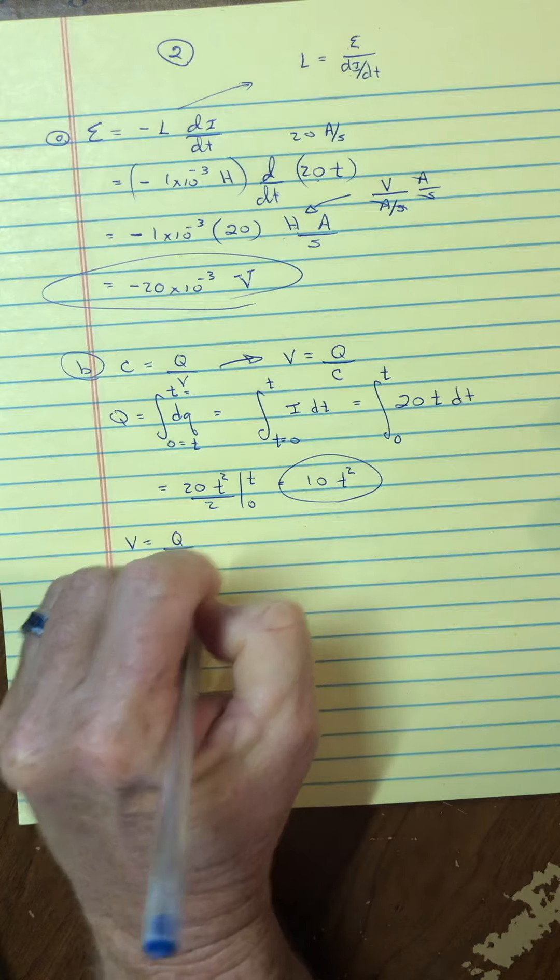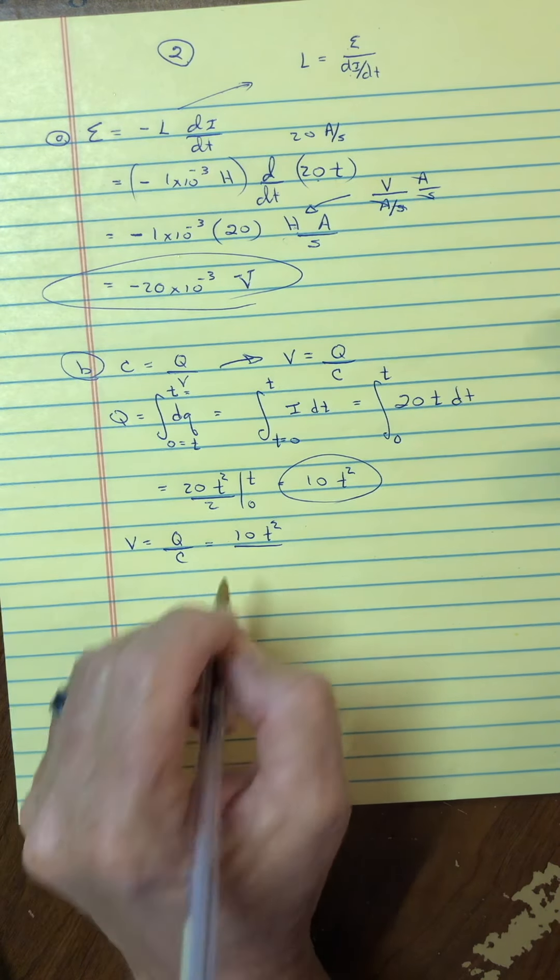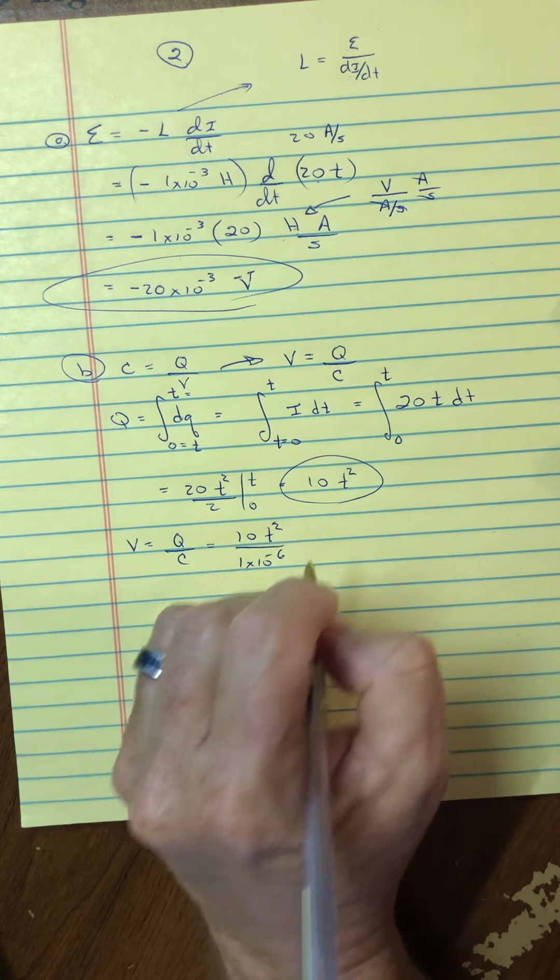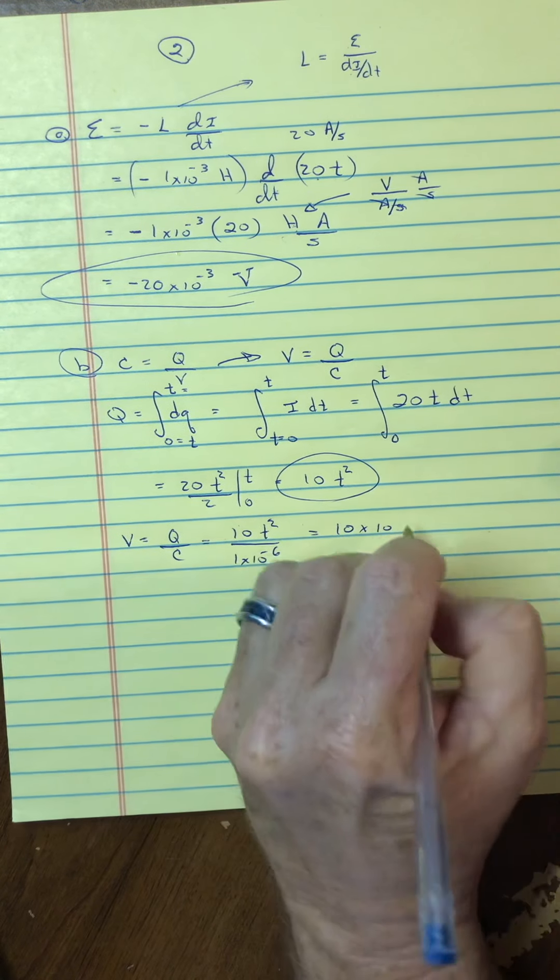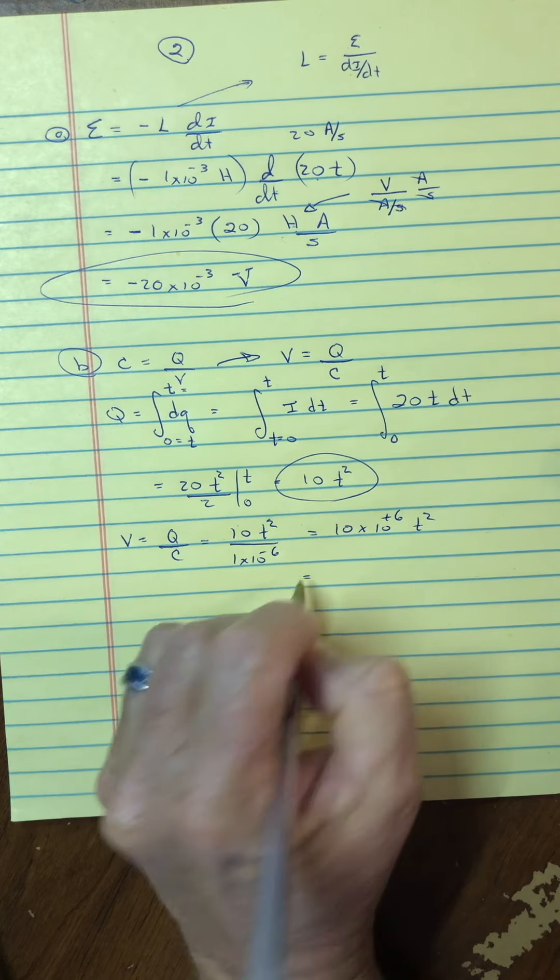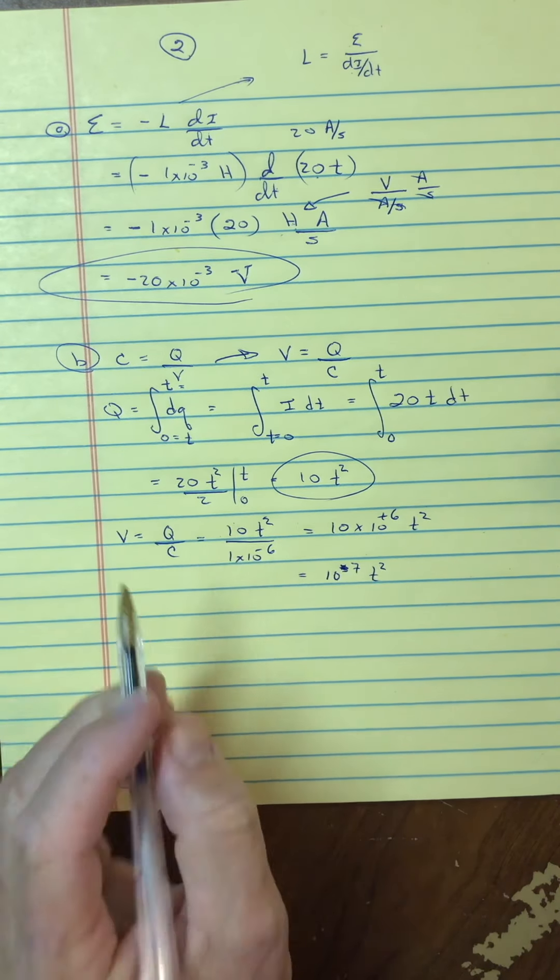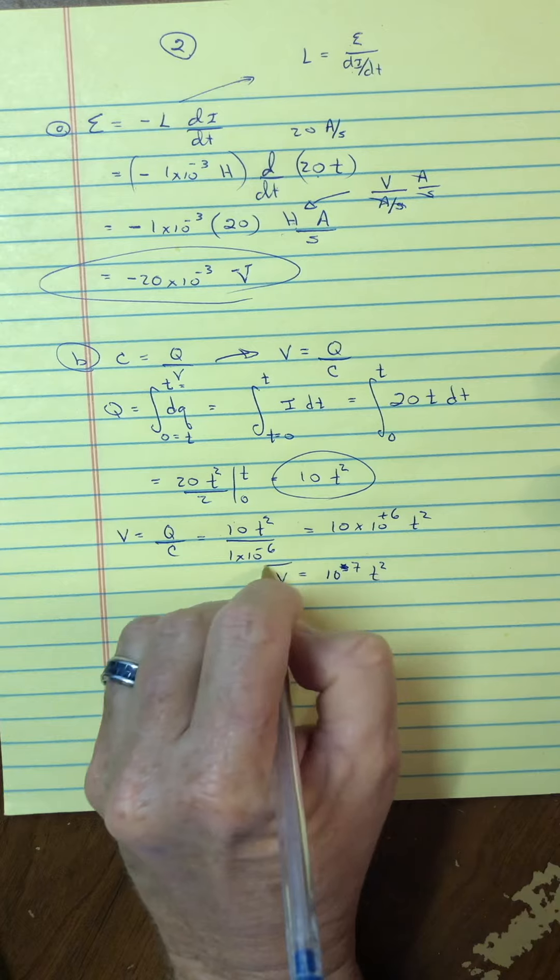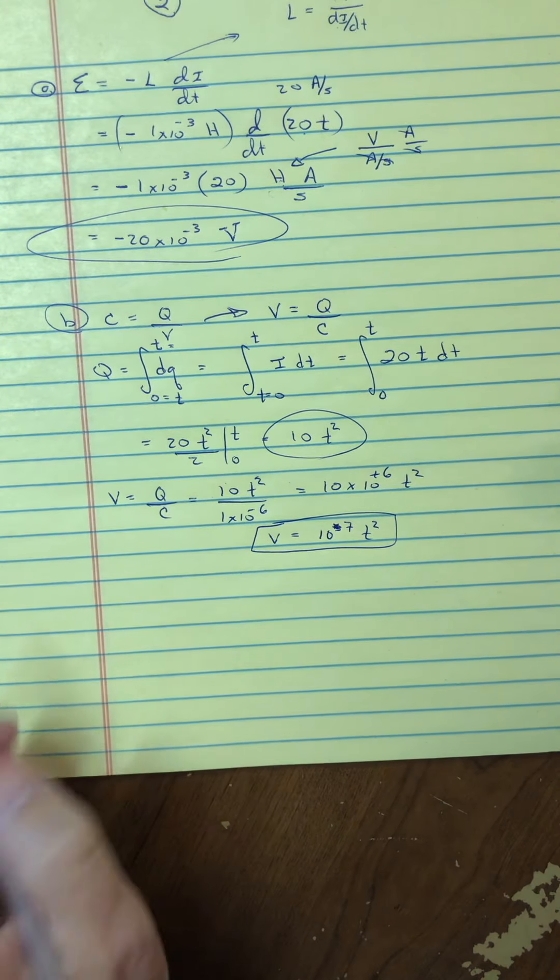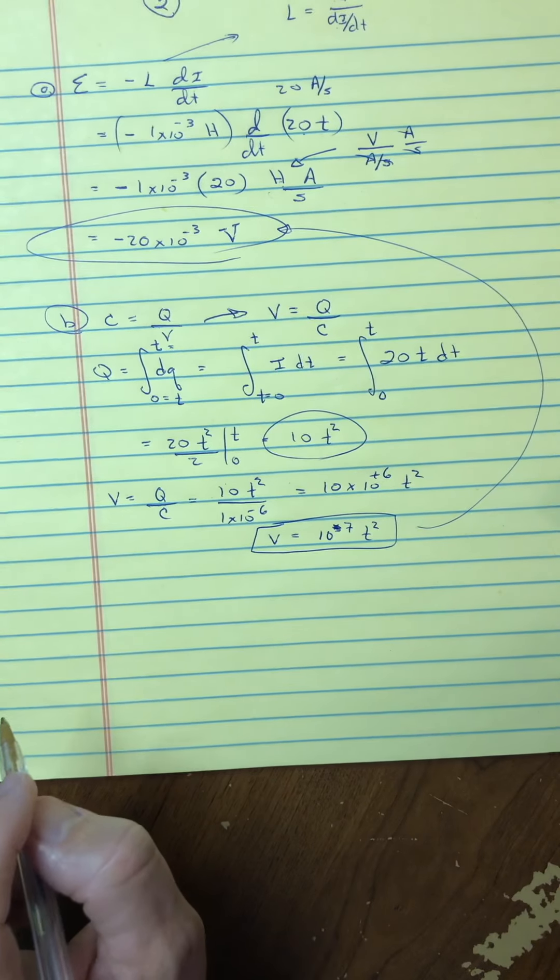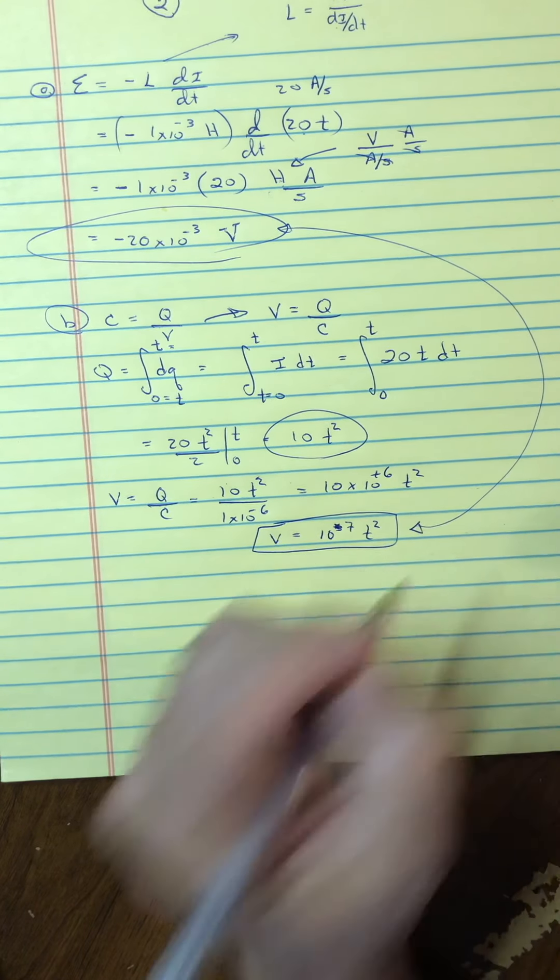So, taking that the voltage is charge divided by capacitance, I would take this 10t squared and divide it by the capacitance, which they said was 1 microfarad. And, maybe I'll put those together, because that would be 10 to the 6th t squared, which, of course, I'll just write as 10 to the 7th t squared. And, there would be the equation for the voltage. I think that's what it said, b, the voltage. So, we've got the voltage on the inductor and the voltage on the capacitor.